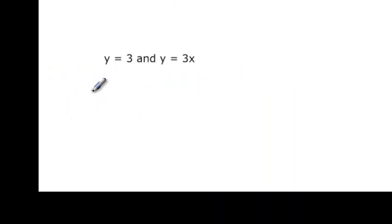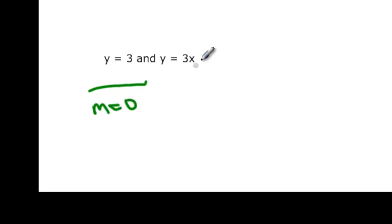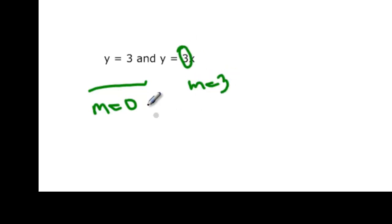y equals three is a horizontal line, so its slope is going to be zero. Then y equals three x has a slope of three. They're not the same slope and not opposite reciprocals, so they are neither.